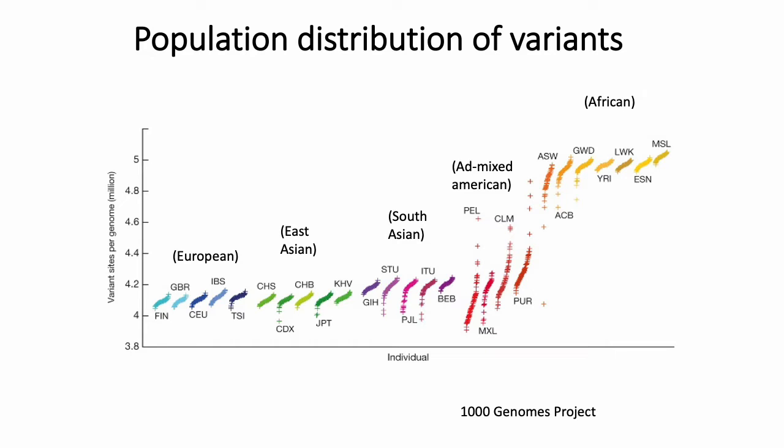This is basically to say that when we talk about identifying genetic variants associated with different complex traits, there can be a lot of heterogeneity between different populations — not all variants affect all populations equally. If Africans have many more genetic variants than Europeans, there could be African-specific variants that drive phenotypic variation that doesn't exist in Europeans.